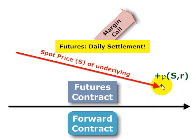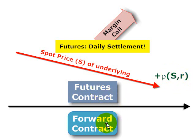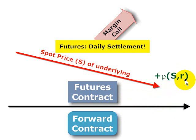So on balance, the rule becomes: when the spot price is strongly positively correlated with interest rates, the futures price tends to be higher than the forward price. And conversely, when there is strong negative correlation between the spot price and interest rates, the forward price will tend to be higher than the futures price. This is David Harper of the Bionic Turtle. Thanks for your time.